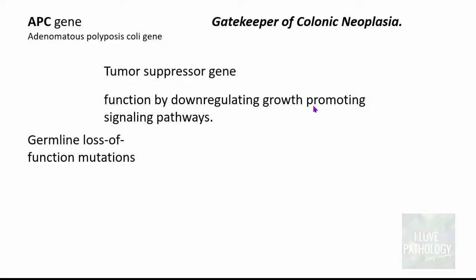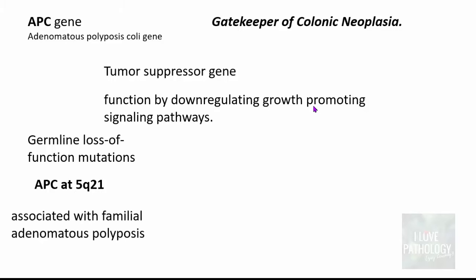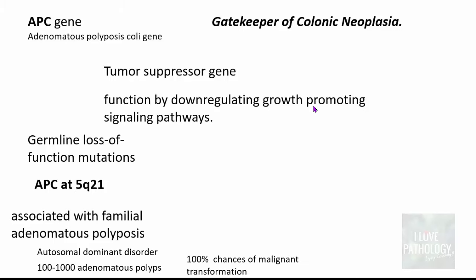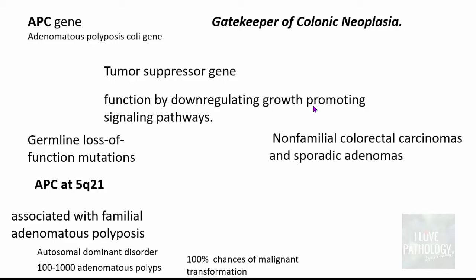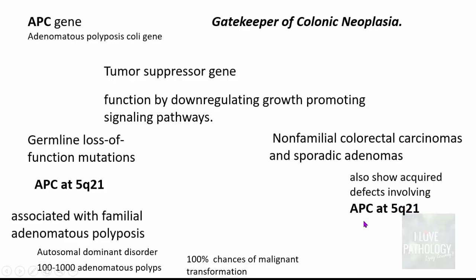Germline loss-of-function mutations involving the APC gene at the long arm of chromosome 5 are associated with familial adenomatous polyposis — an autosomal dominant disorder where there are hundreds and thousands of adenomatous polyps throughout the large intestine, and one of these polyps will invariably turn malignant, meaning there is a 100% chance of familial adenomatous polyposis transforming into malignancy. Non-familial colorectal carcinomas as well as sporadic adenomas also show acquired defects involving the APC gene, confirming that APC is an important gene in the pathogenesis of colorectal carcinoma.